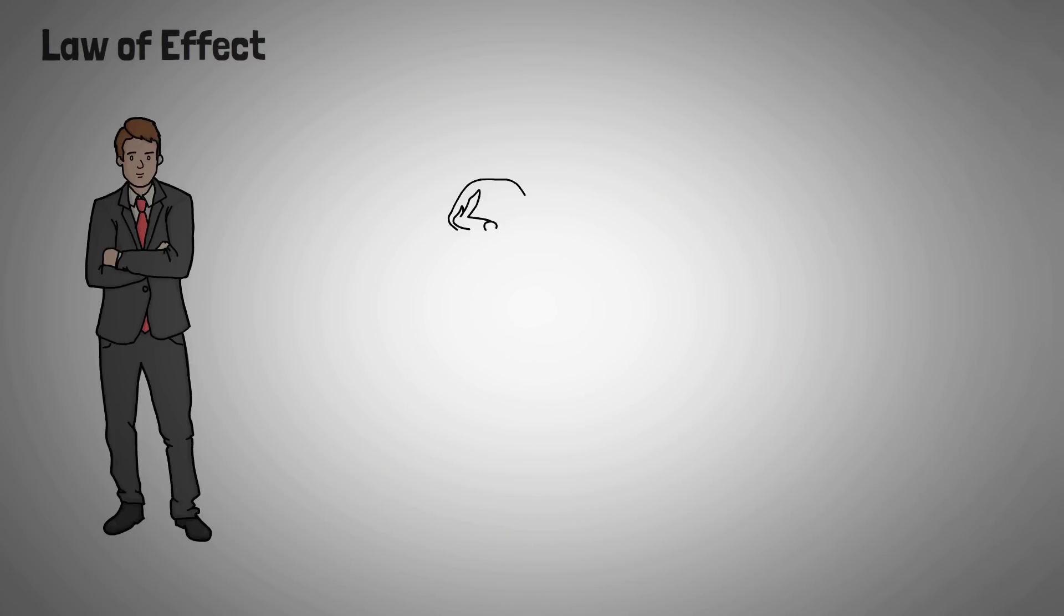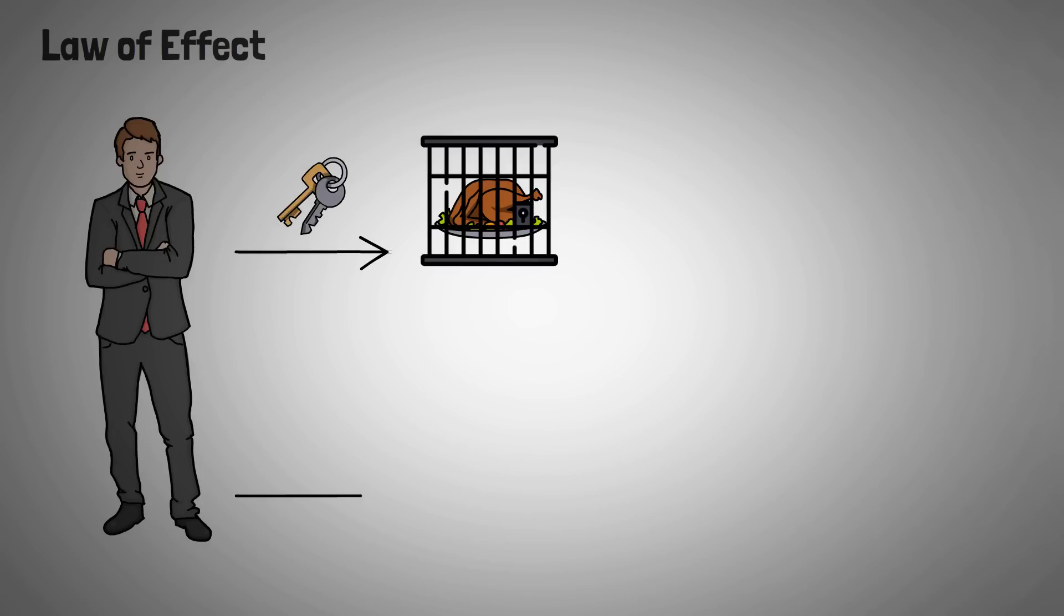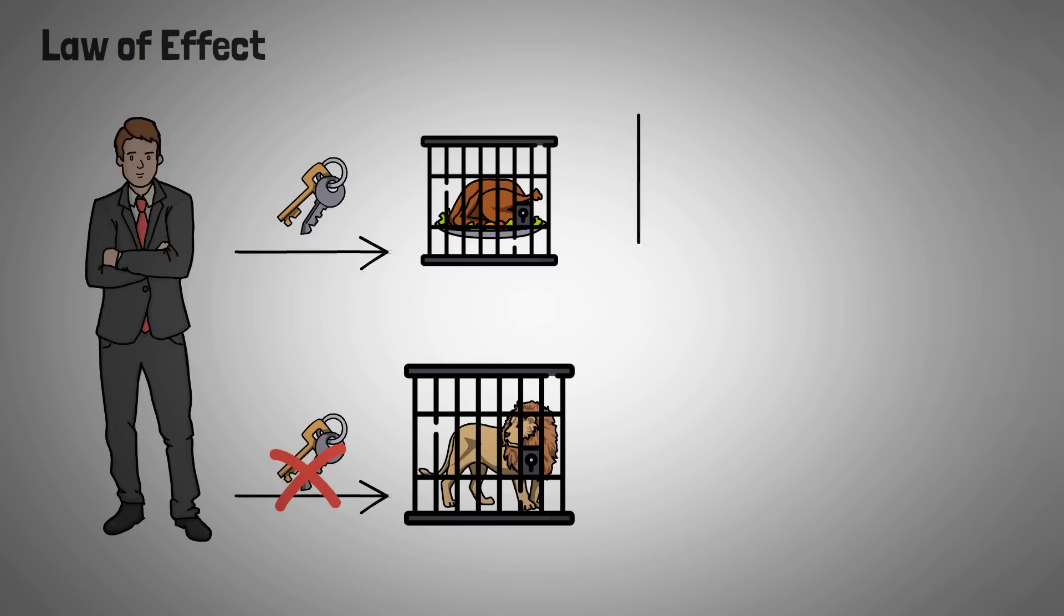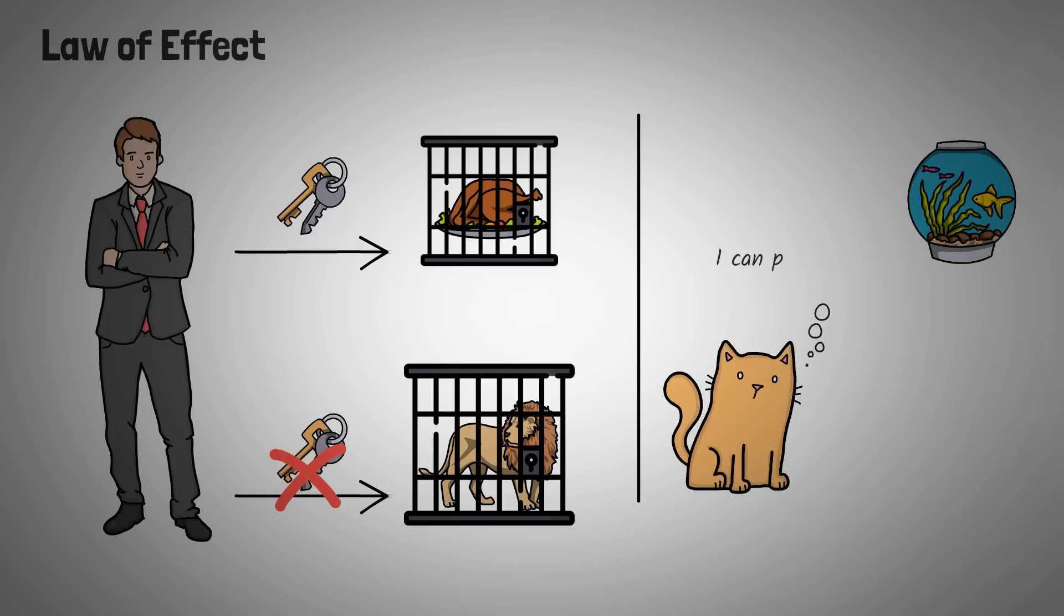The law of effect states that if responses to stimuli produce a satisfying effect, they are likely to be repeated. If responses produce an unsatisfying effect, they are likely to be avoided. The cats enjoyed the scrap of fish that they could access by pulling the lever. If the scrap of fish was replaced by an angry dog, the law of effect states that those cats would not be pulling any levers. We seek responses with positive effects, strengthening the relationship between a stimulus and the response.